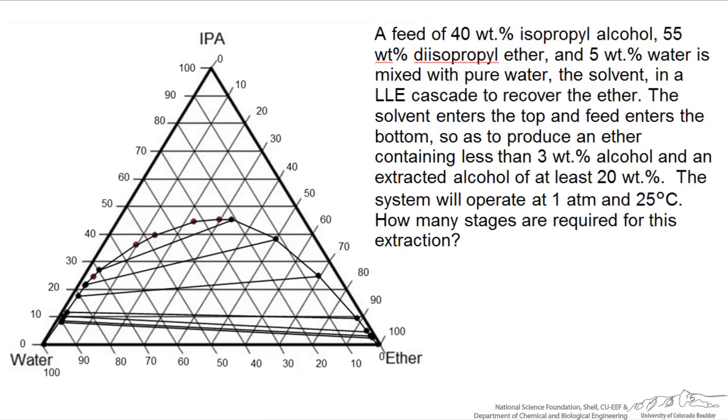We have collected the data from a source and plotted that here with appropriate tie lines. The goal is to produce a raffinate that has less than 3 weight percent alcohol and an extract phase that has at least 20 weight percent alcohol. We're asked to calculate how many stages are required for this extraction.